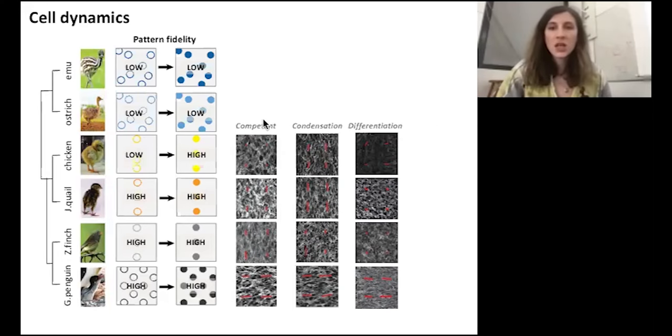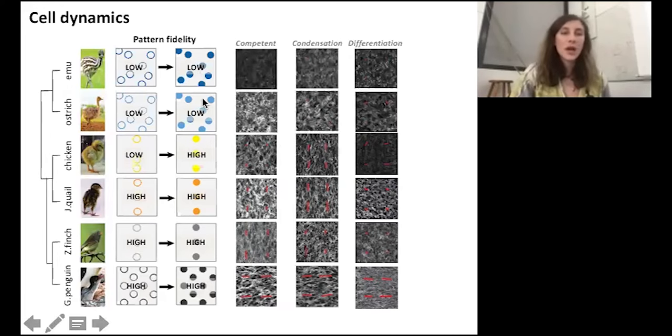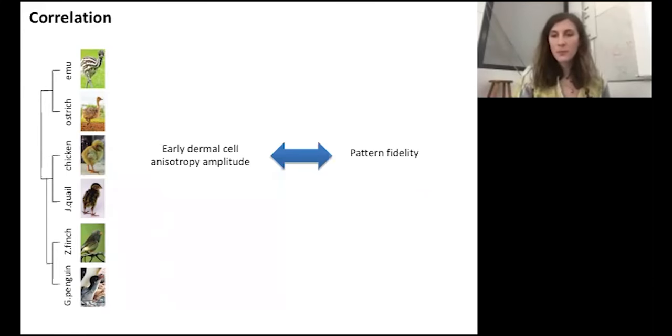In chicken, in which pattern fidelity is lower at the beginning, dermal anisotropy was first low and then transiently increased in the interprimordial space. In emu and ostrich, two low fidelity species, the dermal anisotropy is low during the whole process. Here we saw that there is a correlation between early dermal anisotropy amplitude and pattern fidelity. In other words, the result of this correlative approach suggests that high anisotropy amplitude shapes cell response such that high fidelity patterns self-emerge.